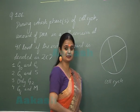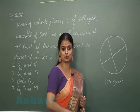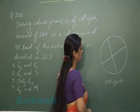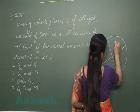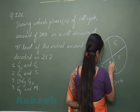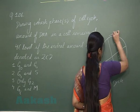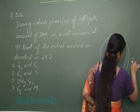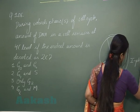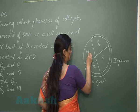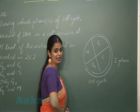In the cell cycle, there is presence of mainly two phases. One is interphase and another one is M phase. Interphase is divided into G1, S, and G2 phase. This one is representing interphase, and I'm writing it as I phase. And this phase where the cell division will occur, this is M phase.